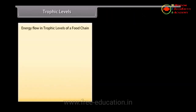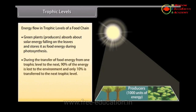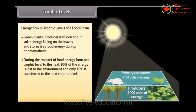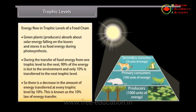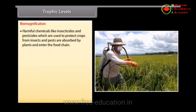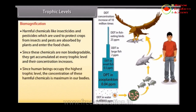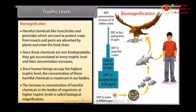Energy flow in trophic levels: Green plants (producers) absorb about 1% of solar energy falling on the leaves and store it. During the transfer of food energy from one trophic level to the next, 90% of the energy is lost to the environment and only 10% is transferred to the next trophic level. Since human beings occupy the highest trophic level, the concentration of harmful chemicals is maximum in our bodies. The increase in concentration of harmful chemicals in the bodies of organisms at higher trophic levels is called biological magnification.